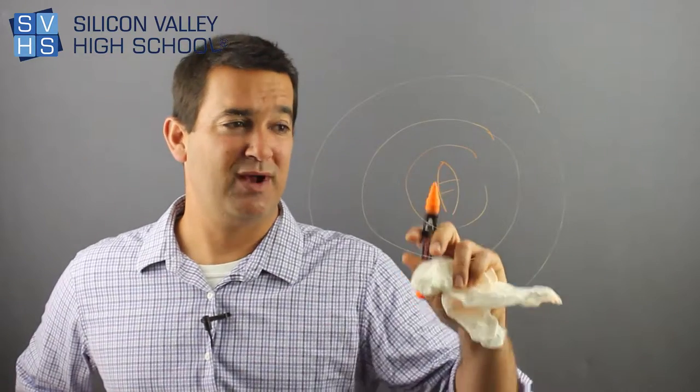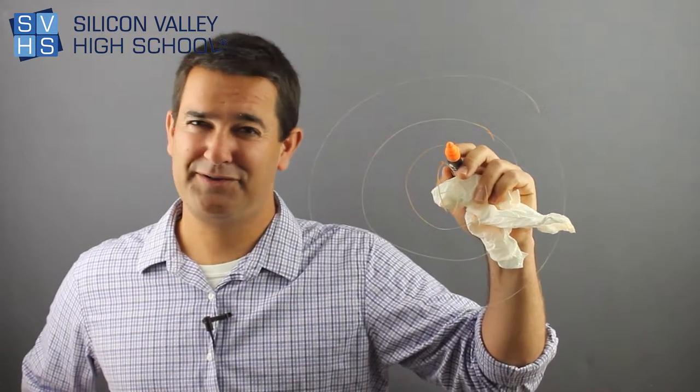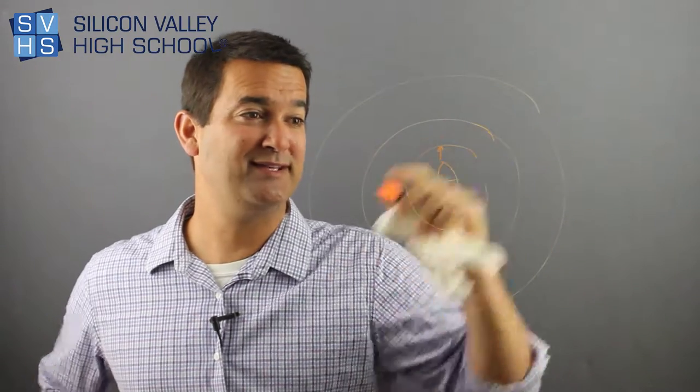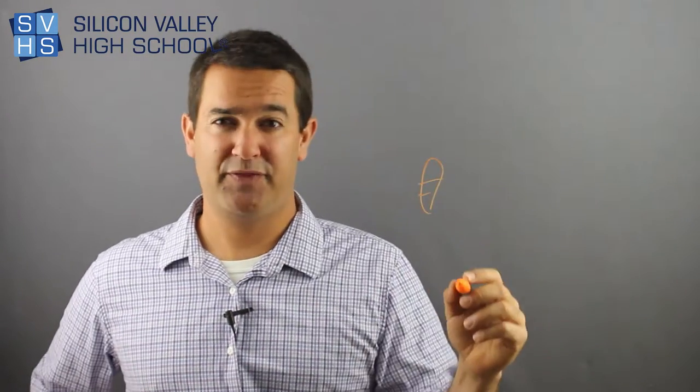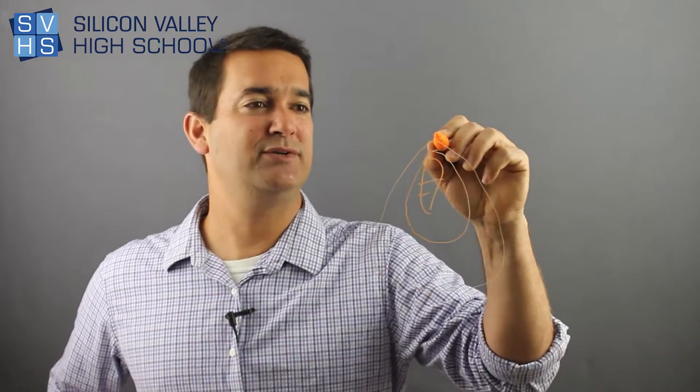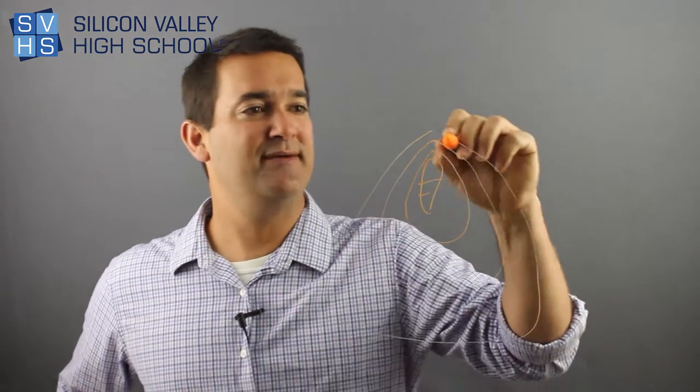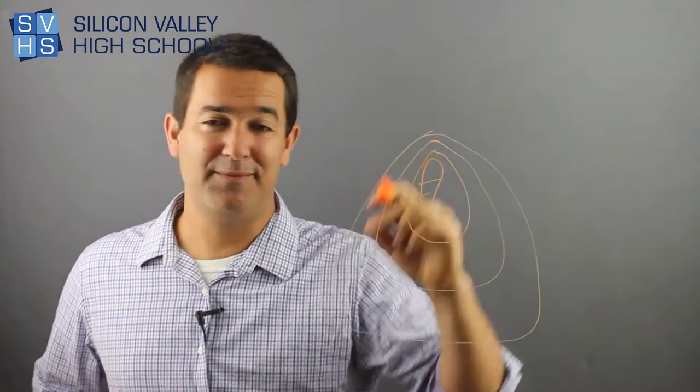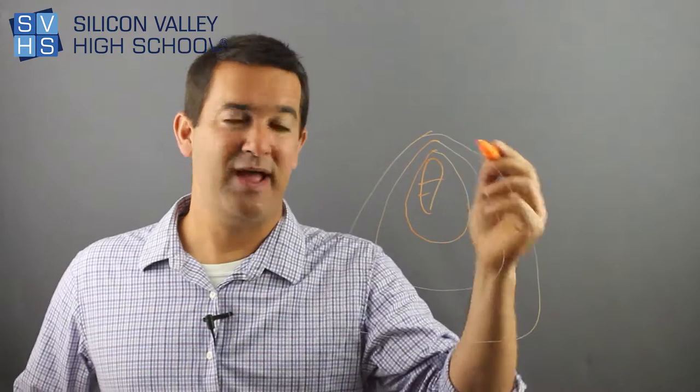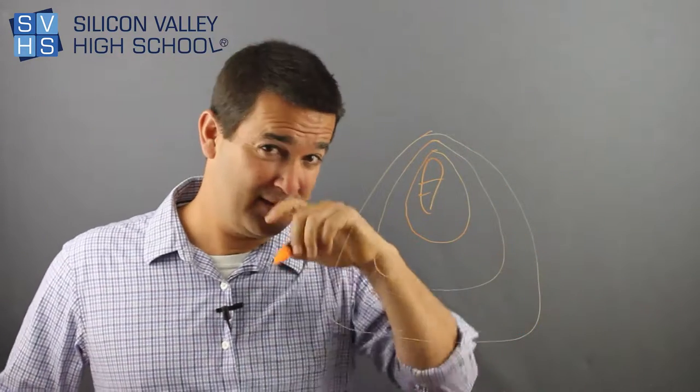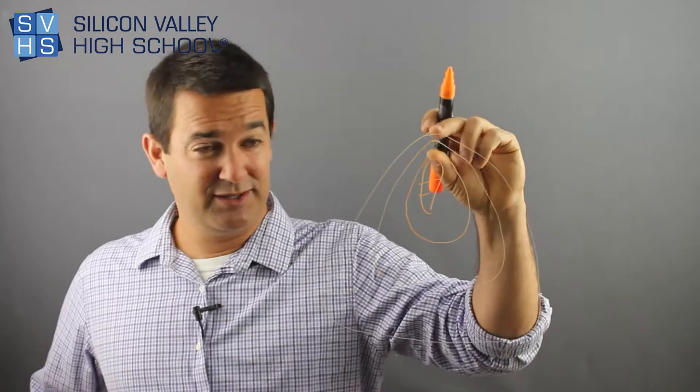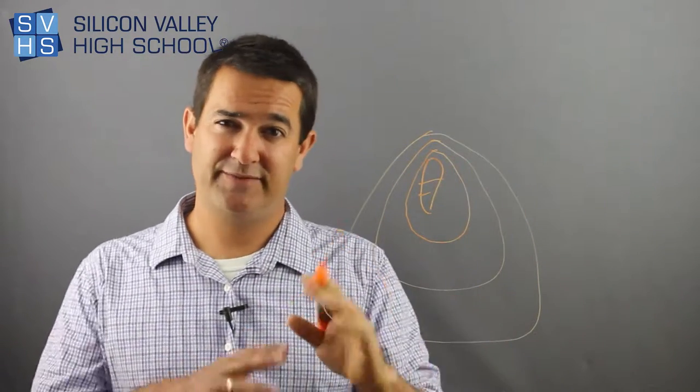But what happens if the boat starts to move forward in this direction? Check this out. If you're creating these waves, the boat will start to catch up with its own waves. It's still making the waves, but as it drives in the same direction the waves are leaving, they start to bunch up in front. Everybody knows that—it's a wake. In front of the boat, you'll have a crunched up wave, and behind it, the waves will spread out.